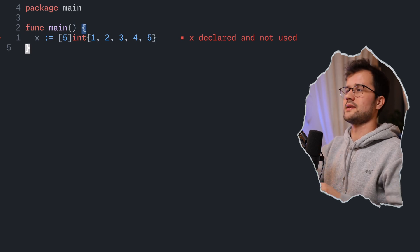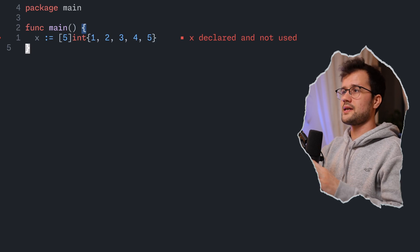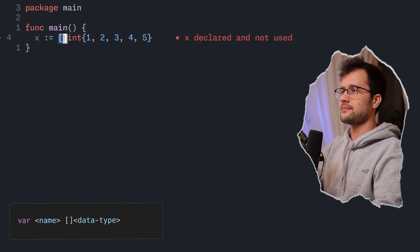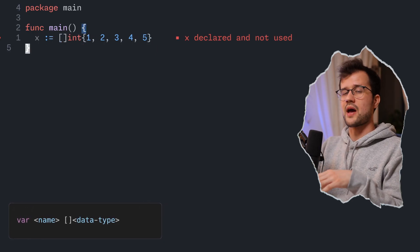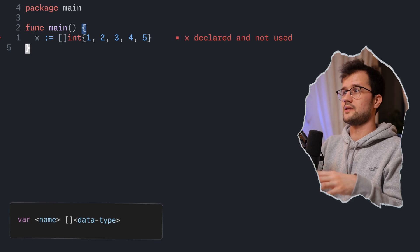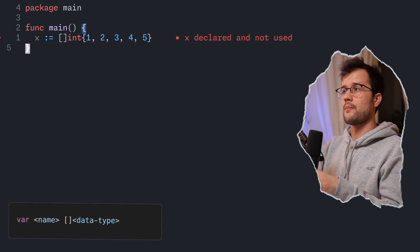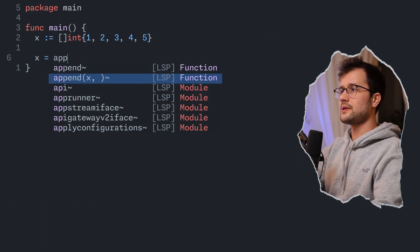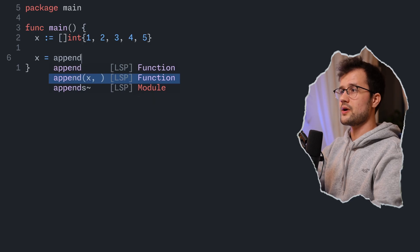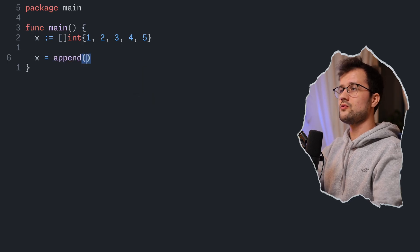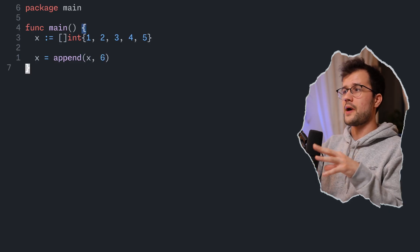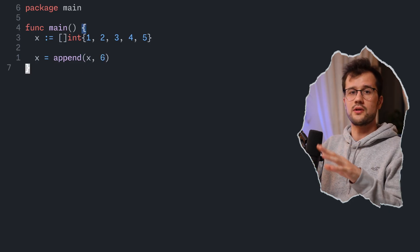That's why slices exist. To declare a slice, we simply remove the fixed size number, making it a dynamic array. We can delete elements and also append elements. To append, we say `x = append(x, newElement)`. It's important to note that append does not mutate the original array — it returns a new one.